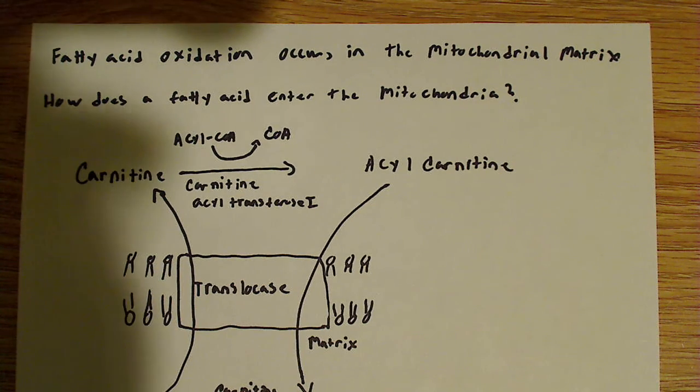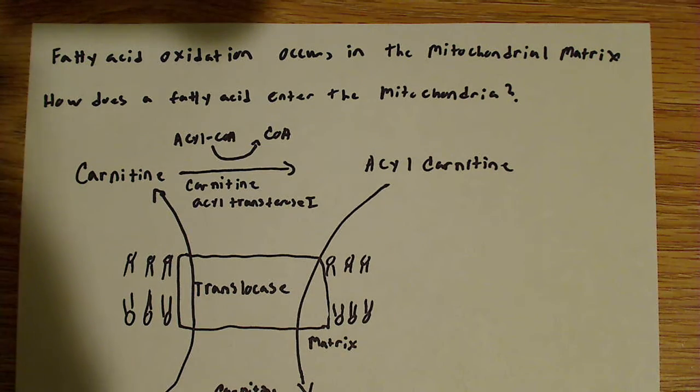So the big question becomes, well, how does the fatty acid enter the mitochondria? Or how can I get this fatty acid across the membrane? Because remember, the mitochondria is a double membrane structure. It has an outer membrane and an inner membrane, and you'd have to cross this membrane in order to get into the matrix. And you're not going to be able to do that because the inner mitochondrial membrane is quite impermeable to just about everything.